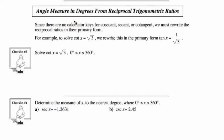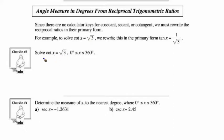Let's talk about angle measure in degrees from reciprocal trig ratios. There are no calculator keys for cosecant, secant, and cotangent, so we have to think about them as reciprocals of the primary form. For example, to solve cot x = √3, we have to rewrite it. Since cotangent is the reciprocal of tangent, this means tan x = 1/√3.